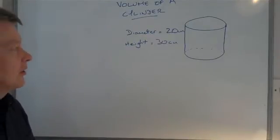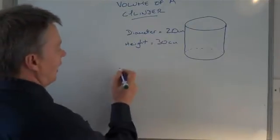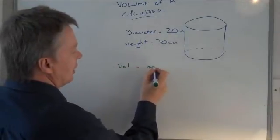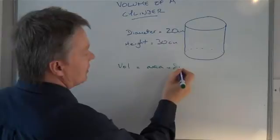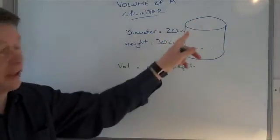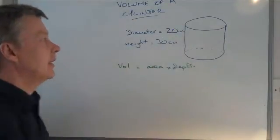Now the first thing is to look at how to work out the volume. So the volume equals the area times the depth. We have an area which is the circle at the top and then the depth of the unit here.